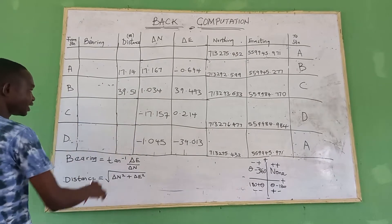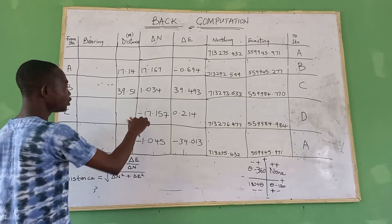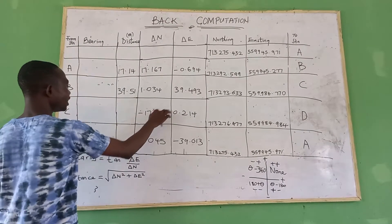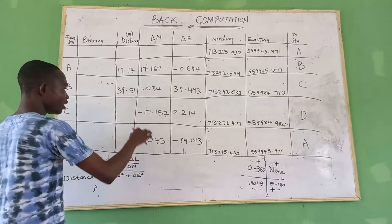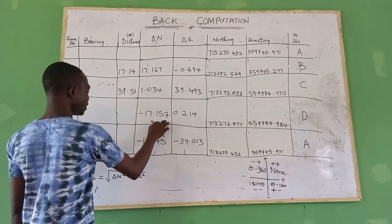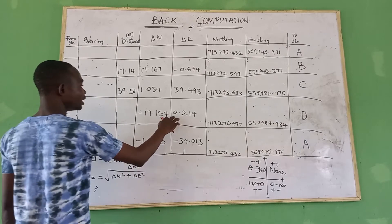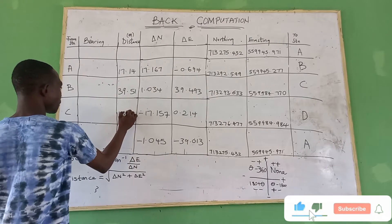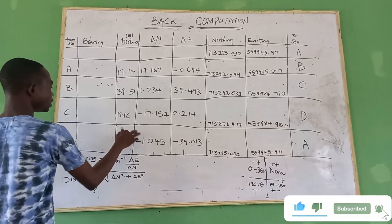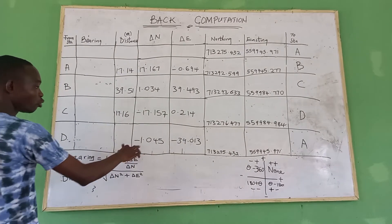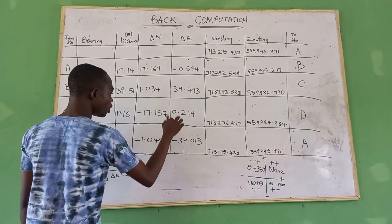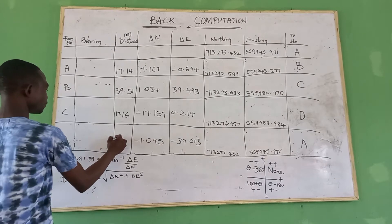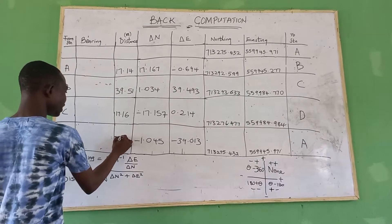For station C, you won't mind the sign — just square the value you have. So 17.157 squared plus 0.254 squared gives us 17.16. For the last station D, 1.045 squared plus 39.013 squared gives us 39.013.